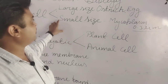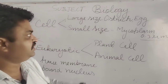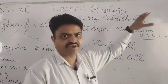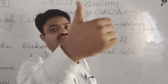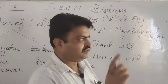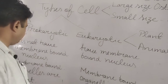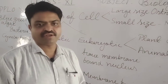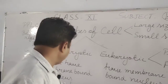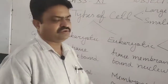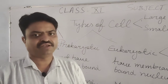But there is also large size found in the eukaryotic type of cell, and its example is the ostrich egg. Ostrich egg is an example of a large size cell. With this, membrane-bound organelles are absent in the prokaryotic cell.